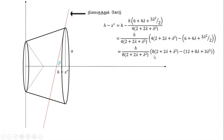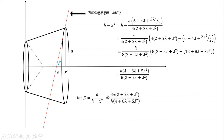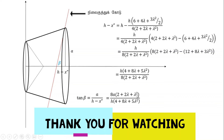Here we have 4 plus 8 lambda plus 5 lambda squared. So h minus x bar, we have tan beta. Tan beta is equal to a divided by h minus x bar, which is equal to h times (4 plus 8 lambda plus 5 lambda squared) divided by (2 lambda plus lambda squared). So the question is answered. If you have a question about this, we have a lot of time to do this — it will be easier to do this. So next we will talk about this. Thank you guys.